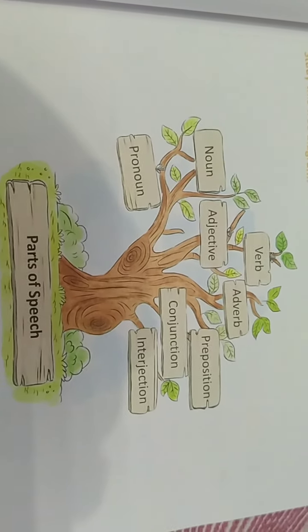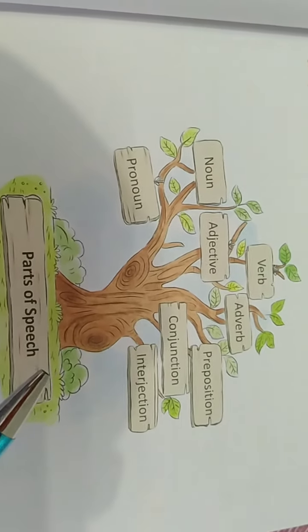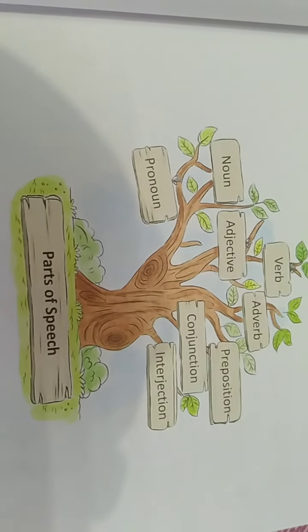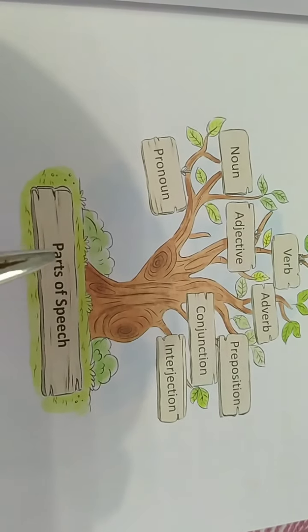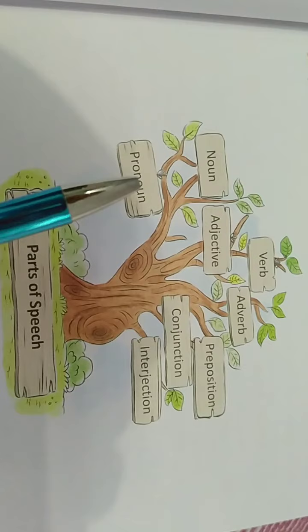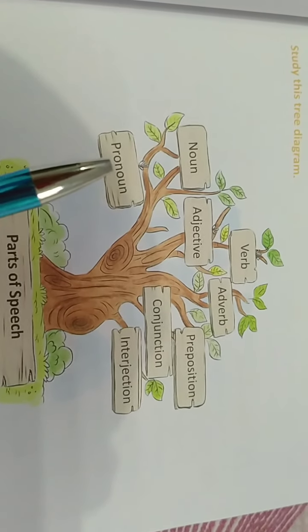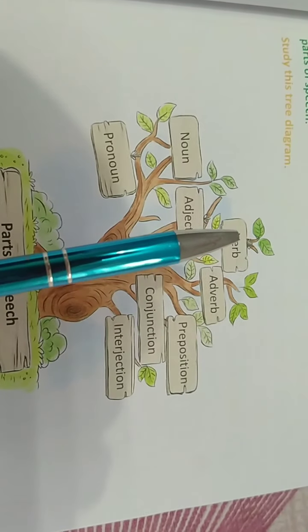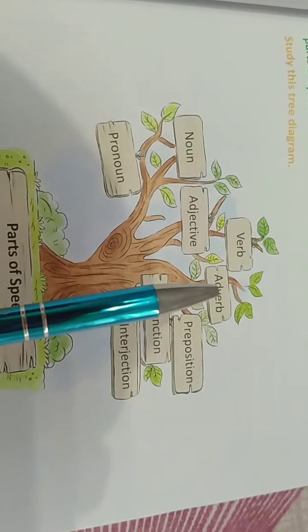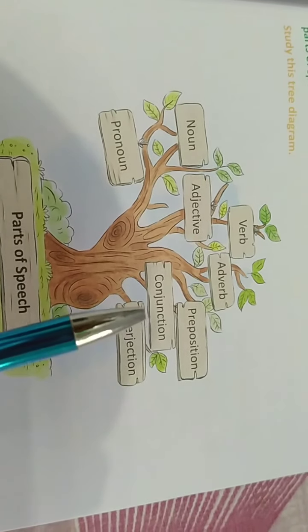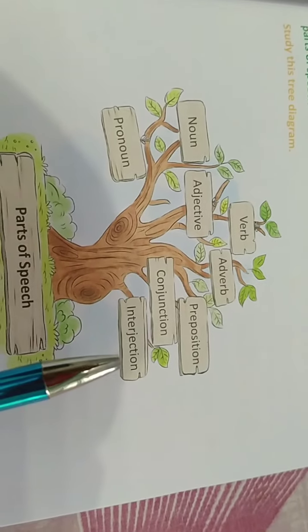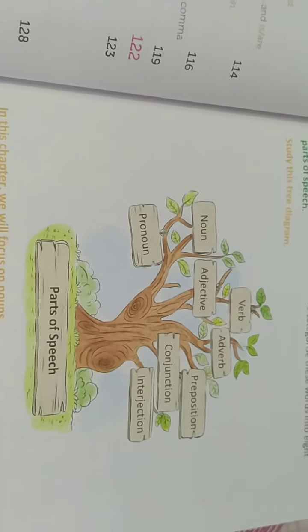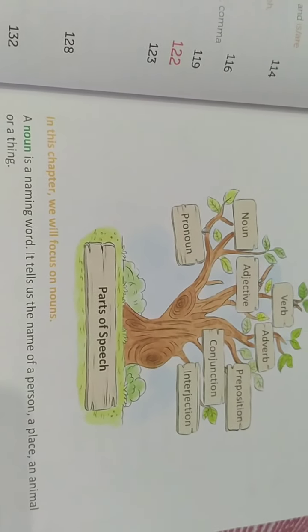So, here in this lesson, one tree has been made to explain you more clearly about noun. You can see it is written 'Parts of Speech.' Here, all 8 parts of speech are written: pronoun, noun, adjective, verb, adverb, preposition, conjunction, and interjection. We know, children, without the help of these parts of speech, we cannot write a simple sentence in English.